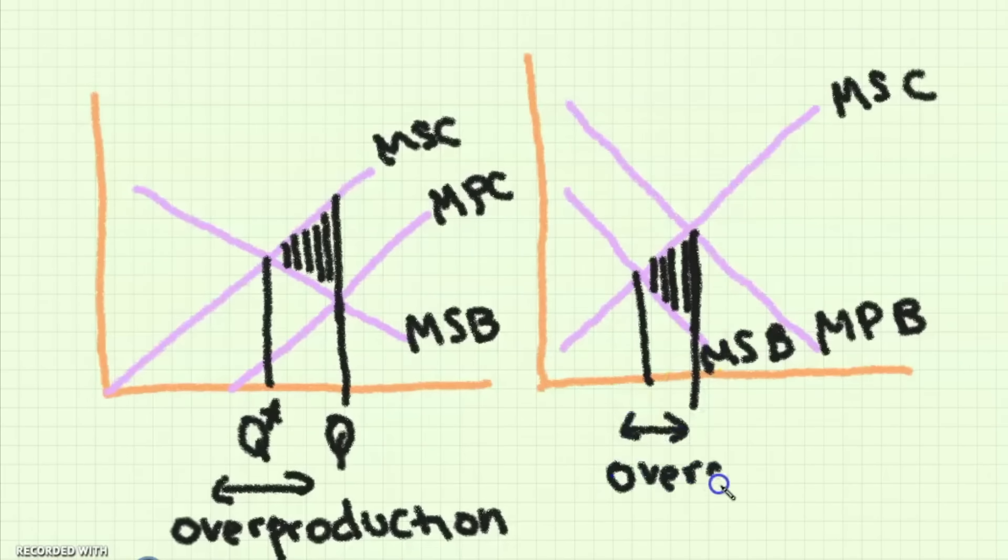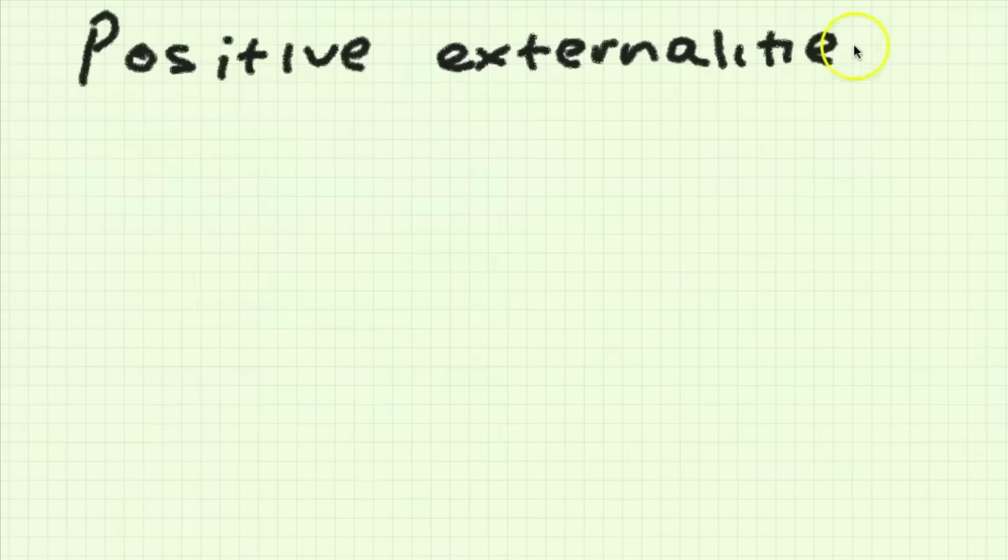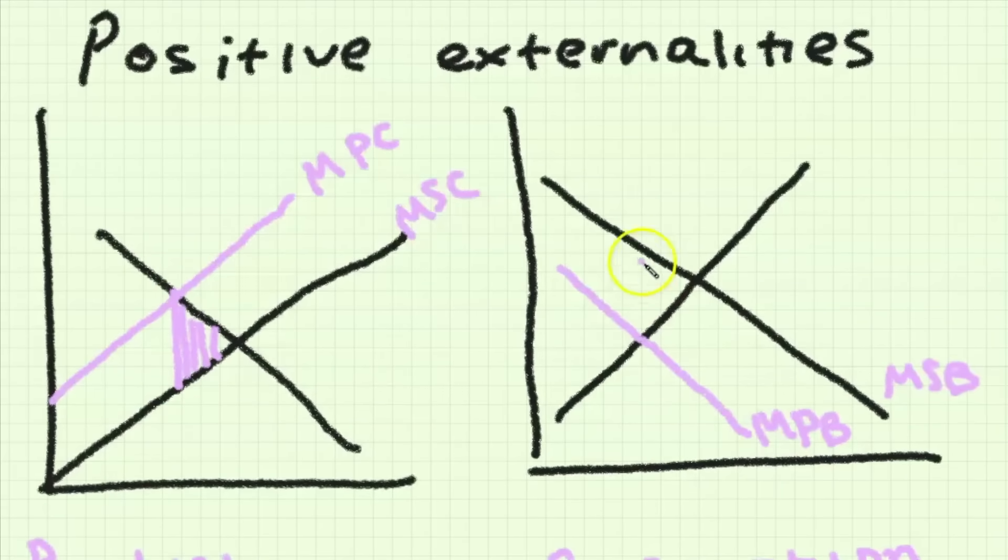If we have a negative externality of consumption the private benefits of consuming something are greater than the social benefits such as in the case of cigarettes and secondhand smoking. Positive externalities occur when a good is under consumed or underproduced so the societal benefits of consuming or producing a good are greater than the private benefits.